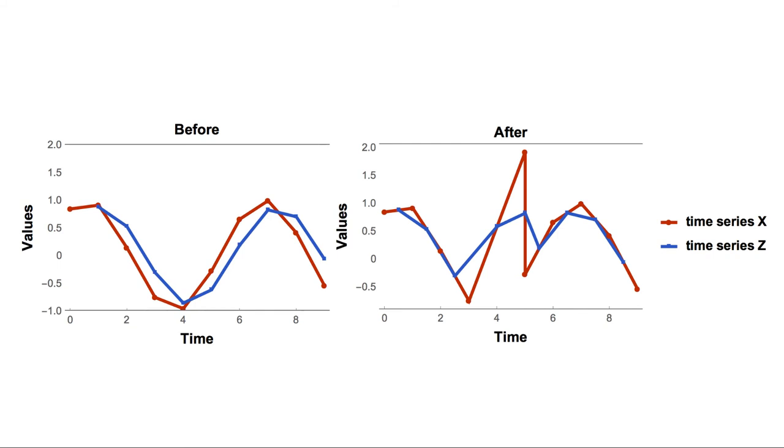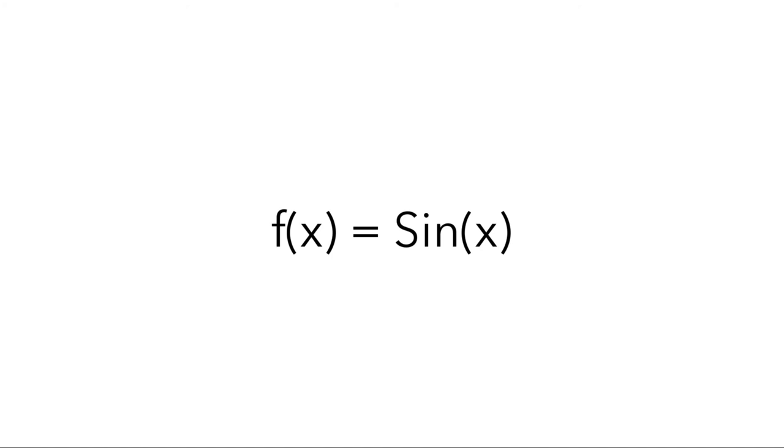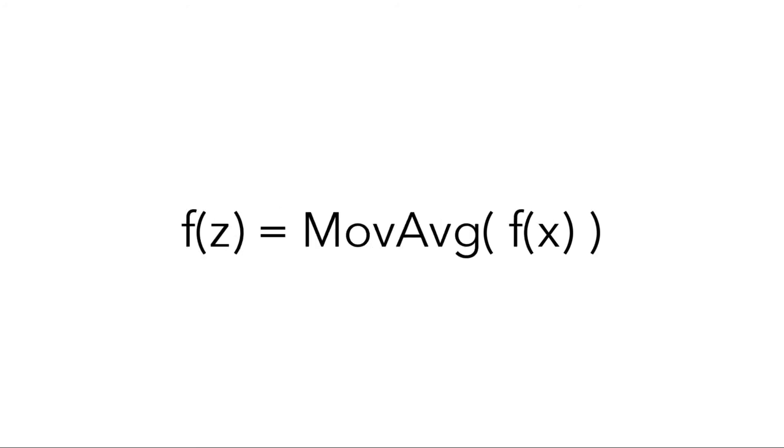the time series x is produced by the mathematical function sine of x, and thus sine of x is the generating mechanism of time series x. On the other hand, the generating mechanism of z is the function moving average of fx, where fx is the sine of x. And, clearly, the moving average of a sine of x depends on the time series x, which is sine x. But it is not the other way around.